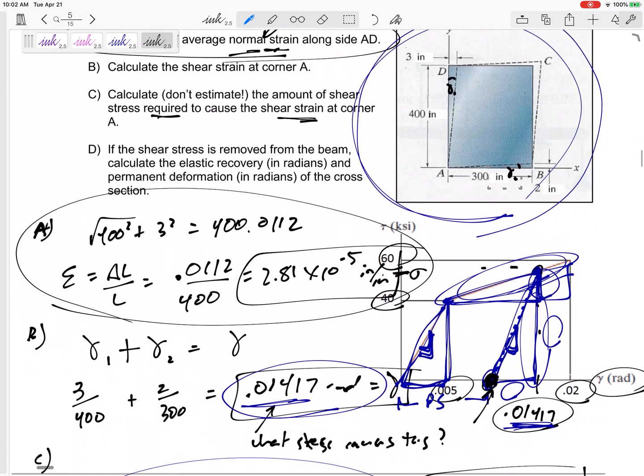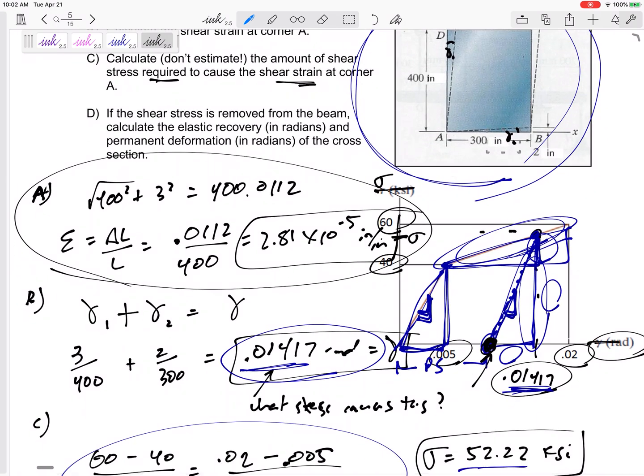For normal problems, if this was normal stress and normal strain, I might ask: what's the modulus of elasticity? Right, what's the slope right here? What is the modulus of resilience? That's the strain energy density under the elastic region. What's the modulus of toughness? That's the area under the whole curve.